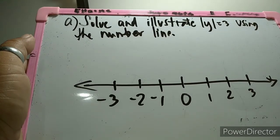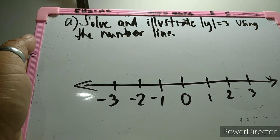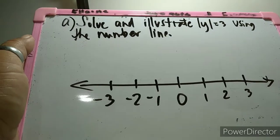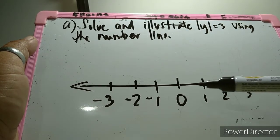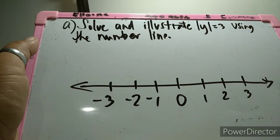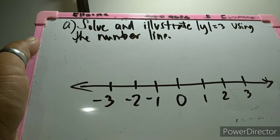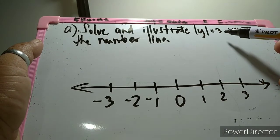Now let us solve and illustrate using the number line: the absolute value of y equals 3. A number line is composed of positive and negative numbers with zero as the origin. To solve this, it means that the distance from zero to y is equal to 3.